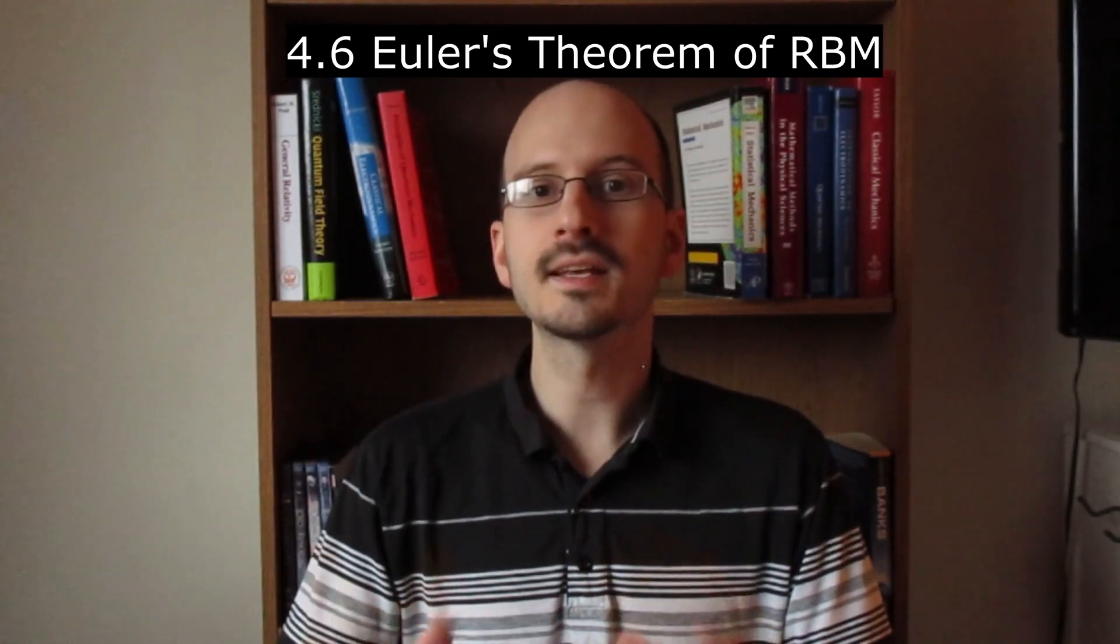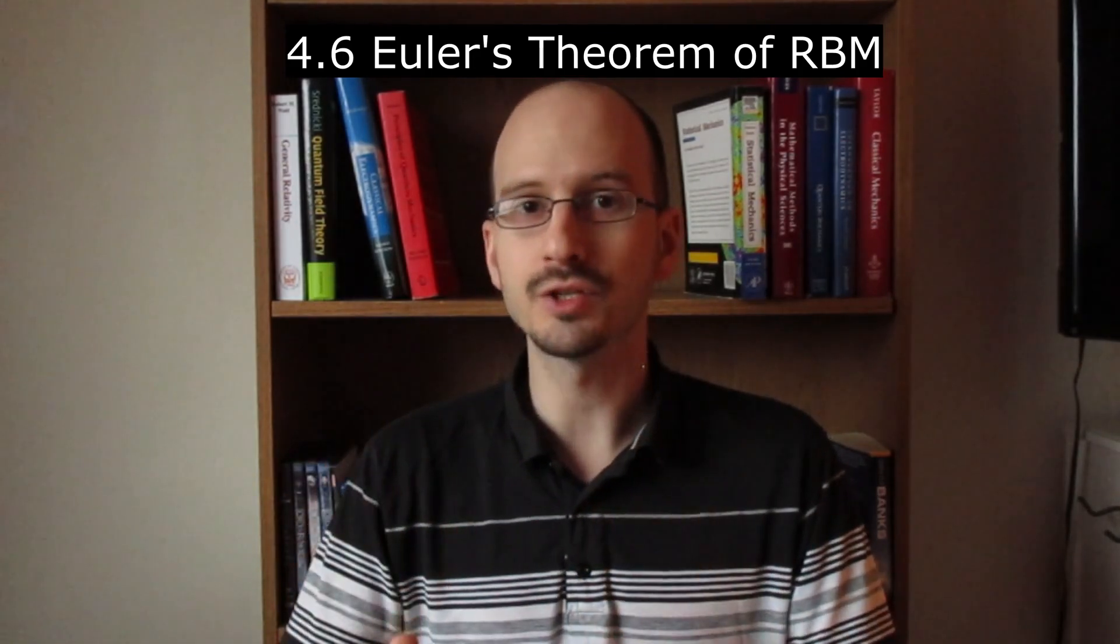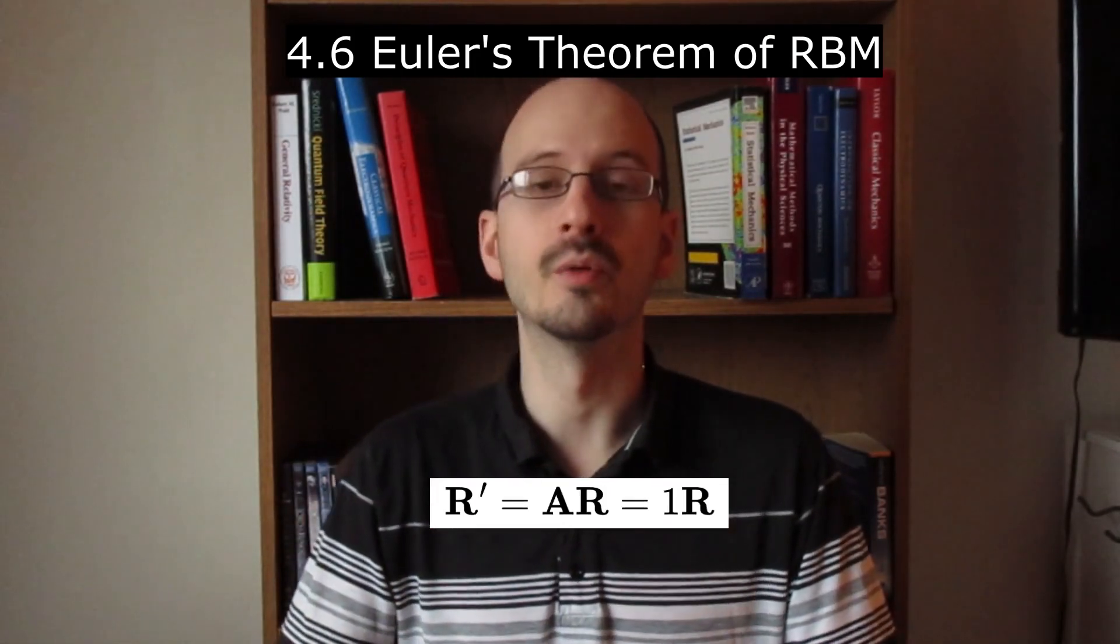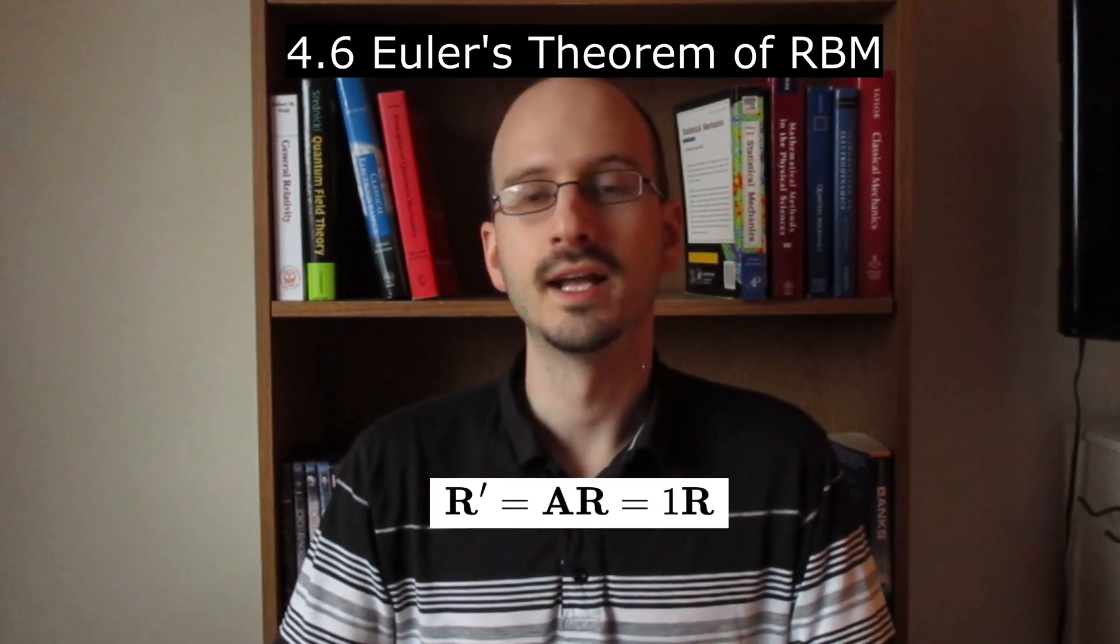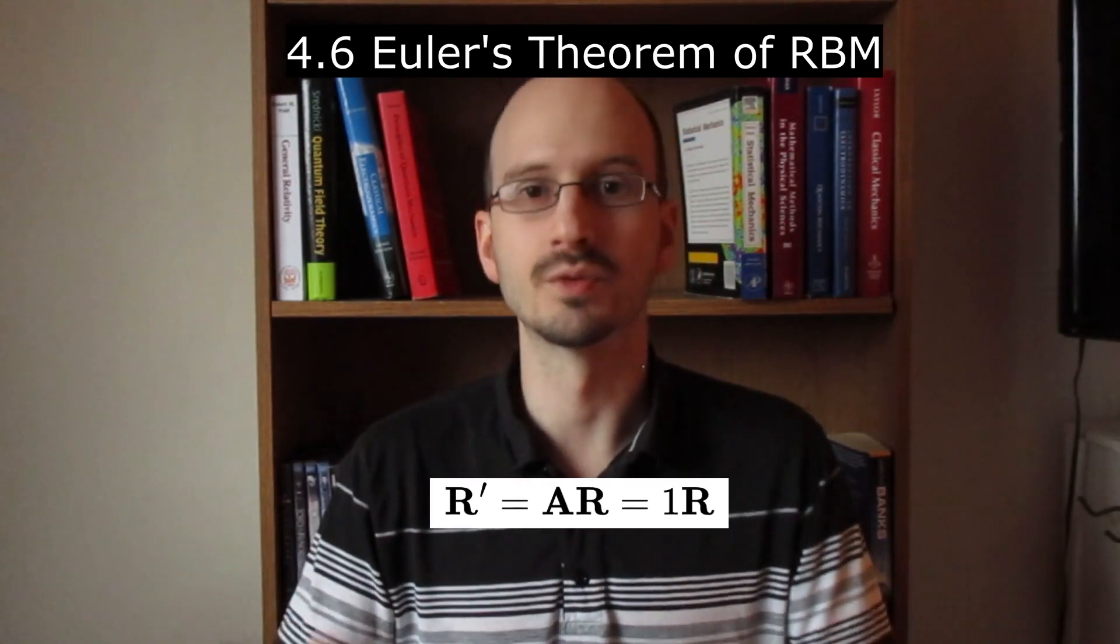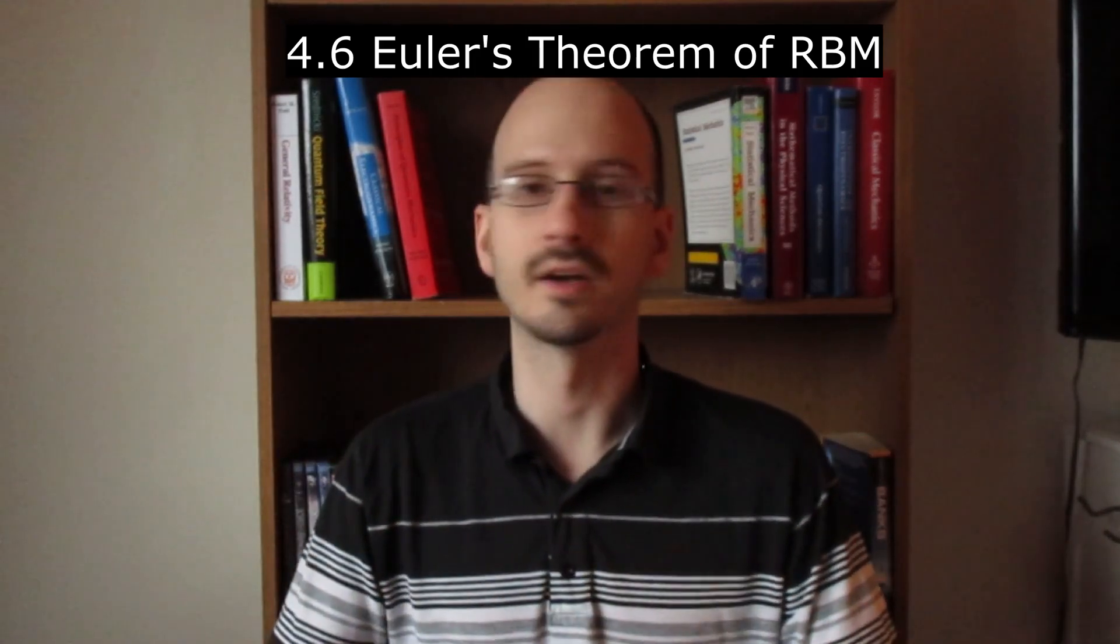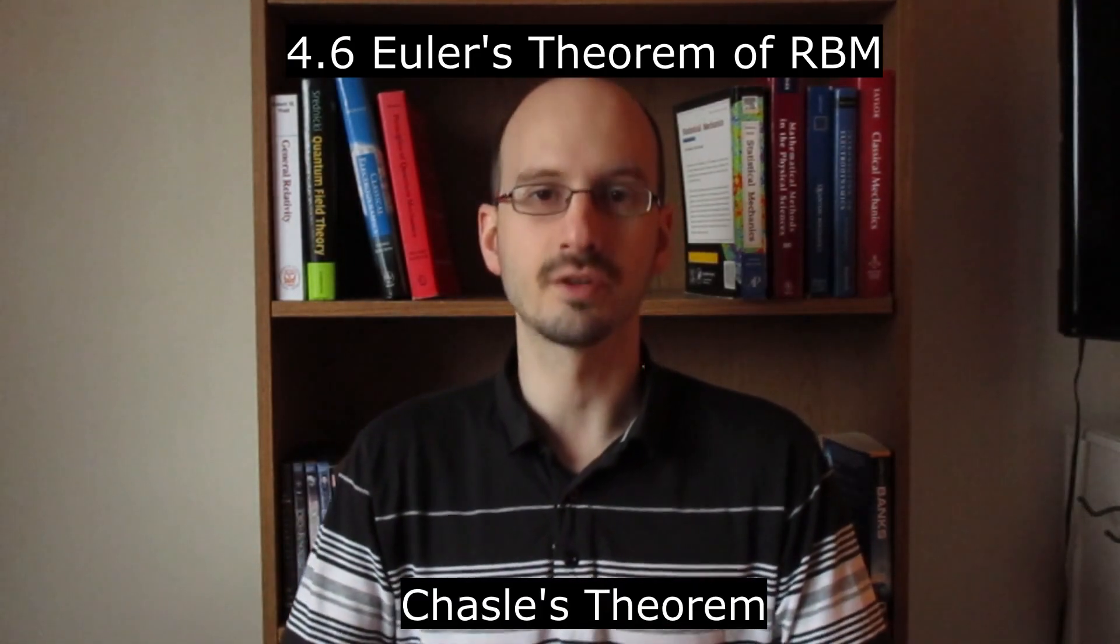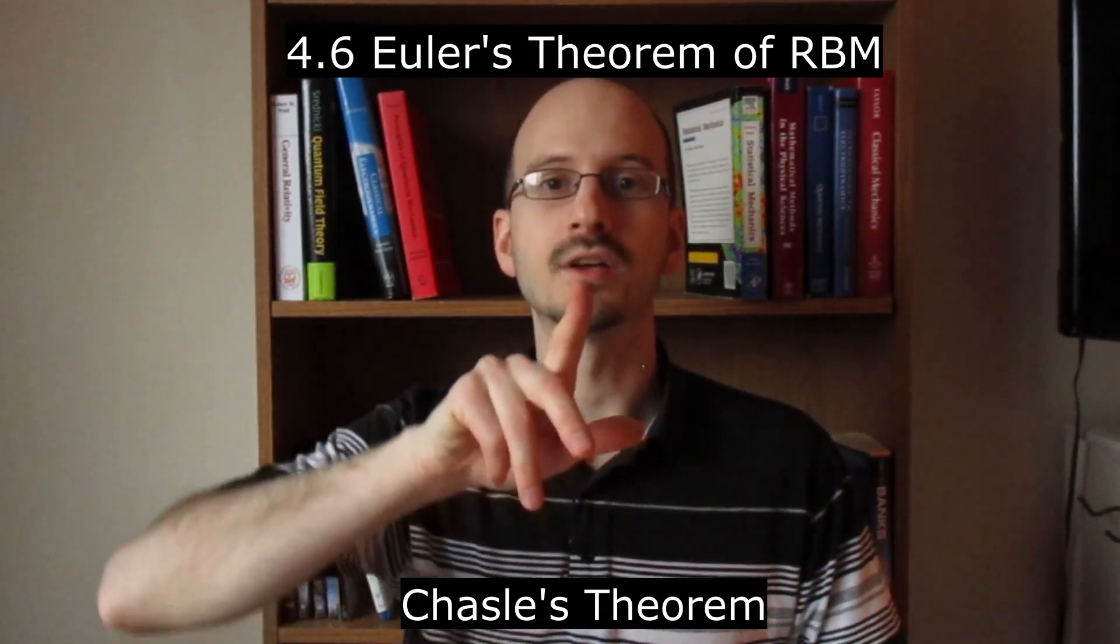Section 4.6 is Euler's theorem of rigid body motion. It says that if one point is fixed, any displacement of a rigid body is a rotation about some axis passing through the fixed point. This means there always exists a vector that, when transformed, equals itself. This vector is called an eigenvector, and it has an eigenvalue of 1 because the result is itself multiplied by 1. The chapter then goes through a discussion of how to do calculations with eigenvectors and eigenvalues, which we'll skip for this video. It ends with Chassel's theorem, which says the most general displacement of a rigid body is a translation plus a rotation.